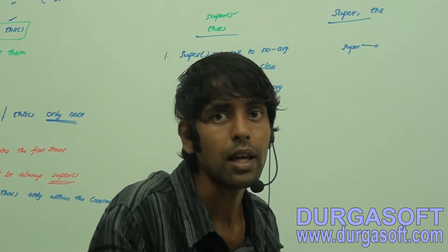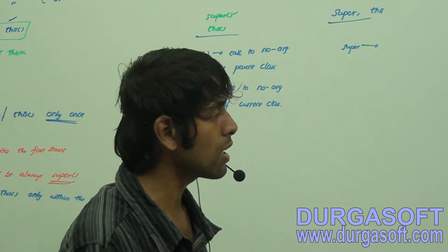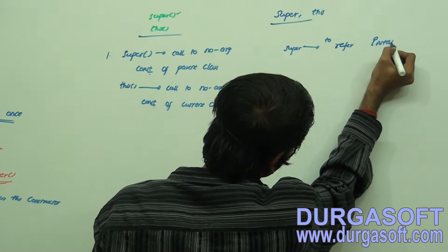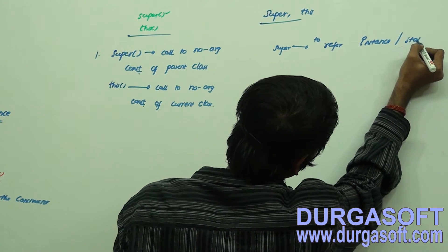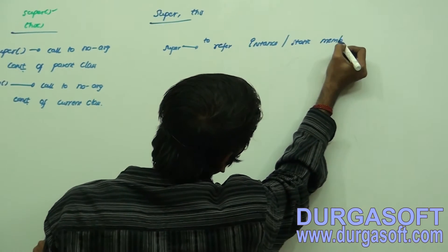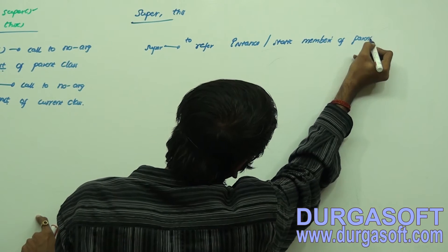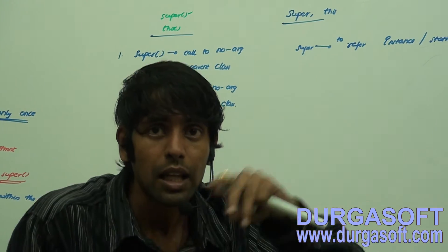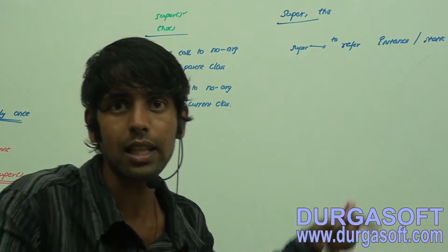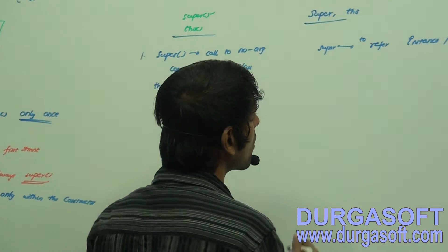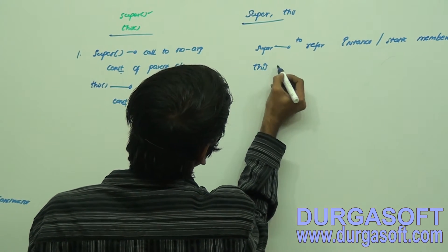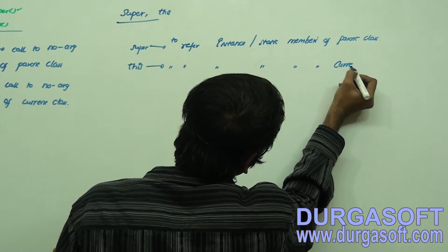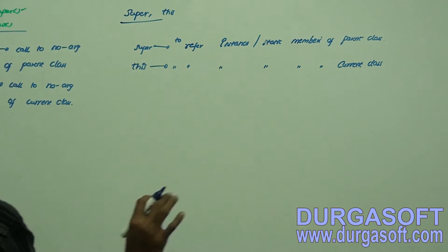In this case, the subclass instance must and should be there. Super is meant to refer to instance or static members of the parent class — whichever parent class that member is available in, that parent class member only will be inherited. And this is meant to refer to instance and static members of the current class.